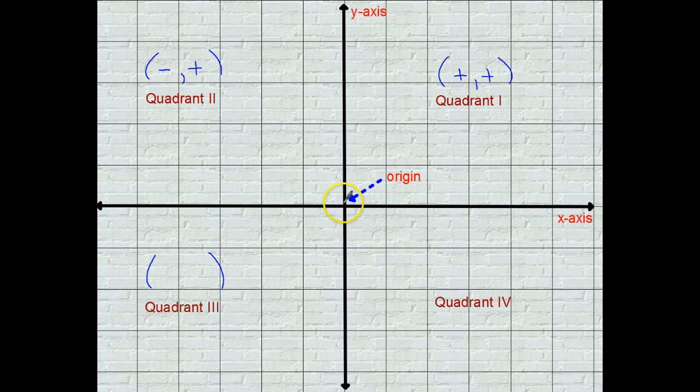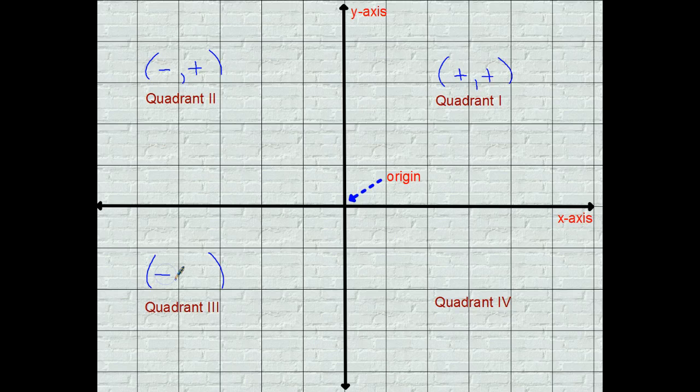Quadrant three, we are going to the left of zero, which is negative, and downward, which is also negative. So negative for the x-coordinate, negative for the y-coordinate.